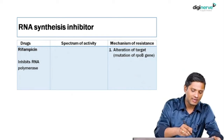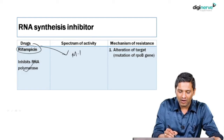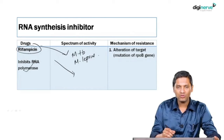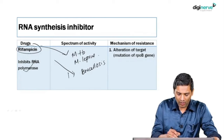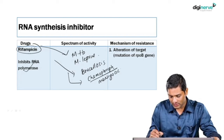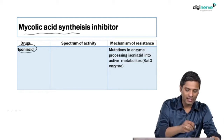The RNA synthesis inhibitor — classical example rifampicin — inhibits RNA polymerase. Its spectrum of activity includes Mycobacterium tuberculosis and Mycobacterium leprae. It is used in combination with other drugs for treatment of tuberculosis and leprosy. Other uses include treatment of brucellosis and as chemoprophylaxis for meningococcal infections. The principal mechanism of resistance is mutation in the rpoB gene, the target gene that rifampicin inhibits.